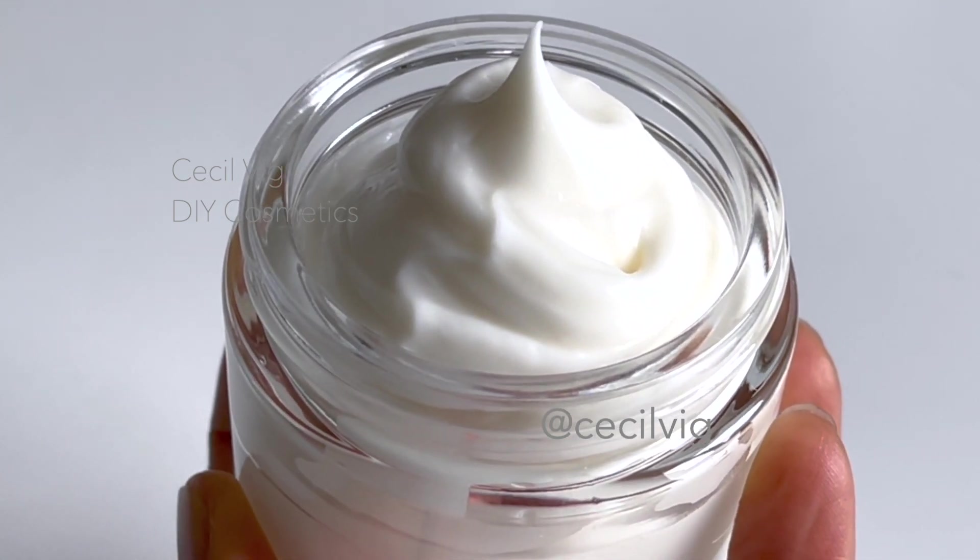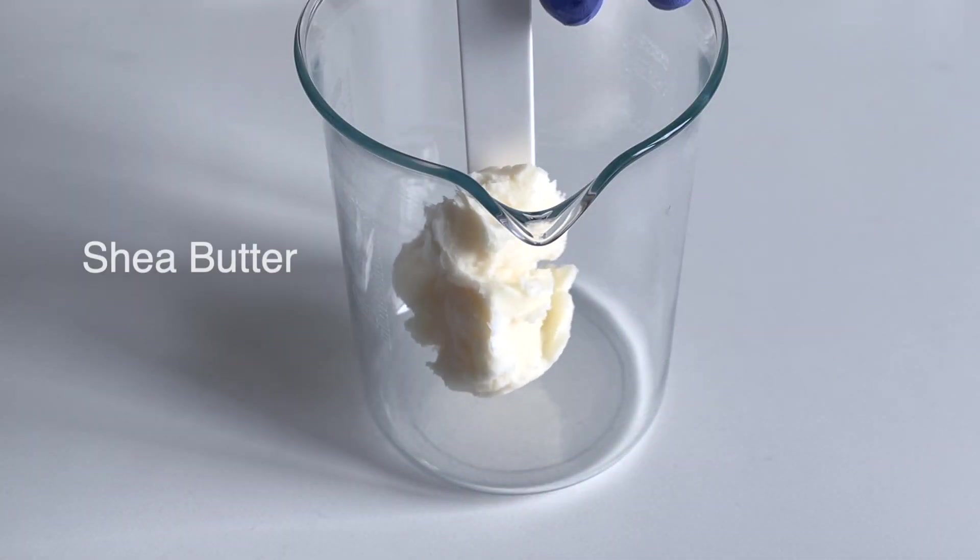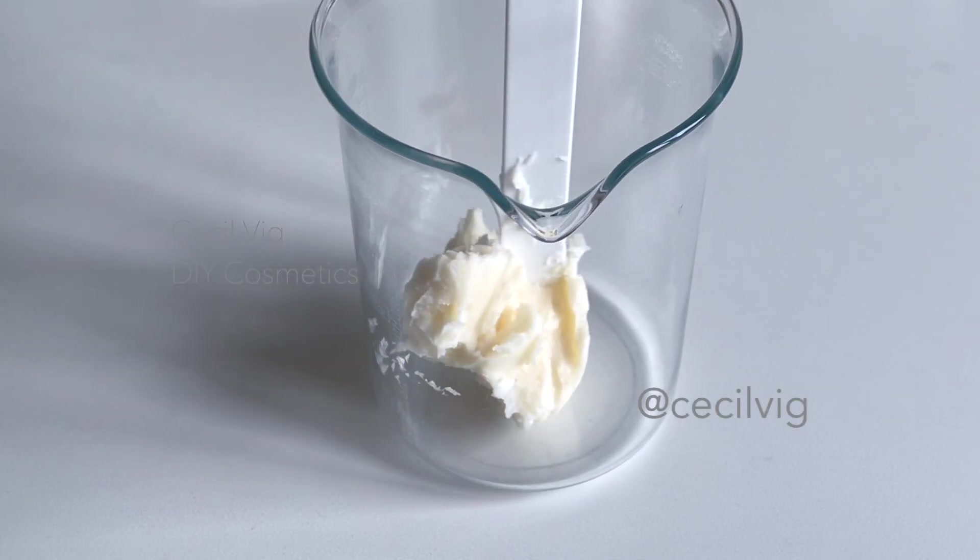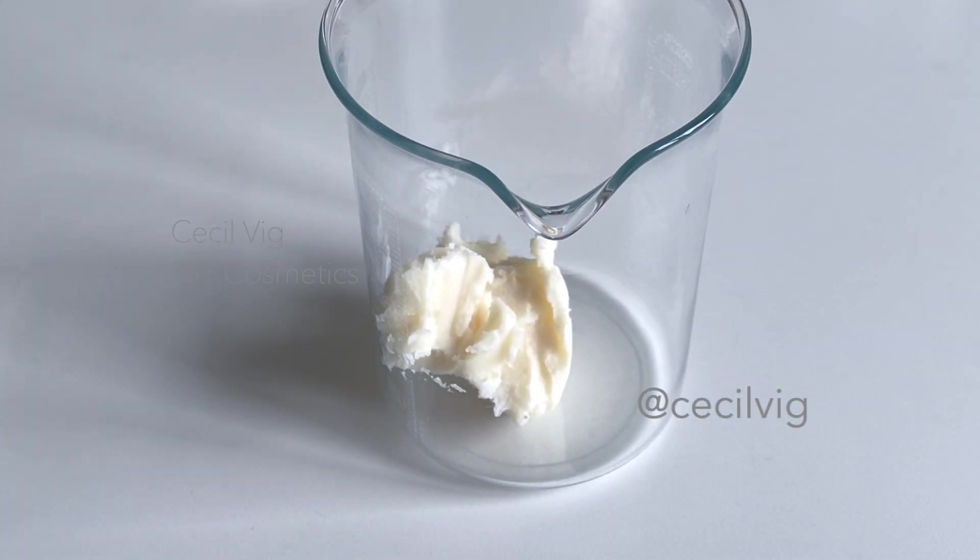We start with the oil phase. Put the shea butter into a heat resistant cup. Shea butter is used for its moisturizing properties. Regular use of shea butter helps to retain moisture in the skin, making it soft and smooth. Shea butter is rich in antioxidants and anti-inflammatory properties.